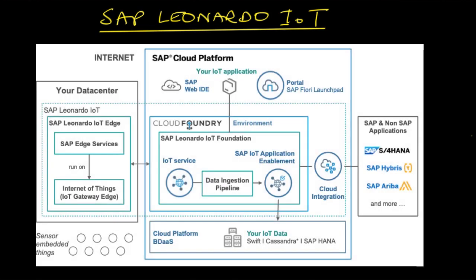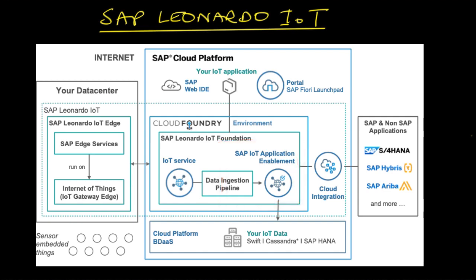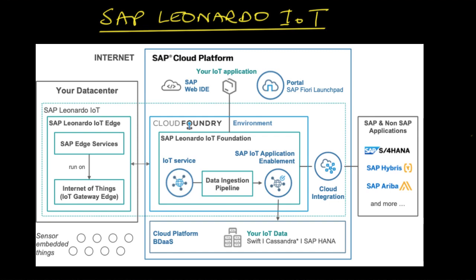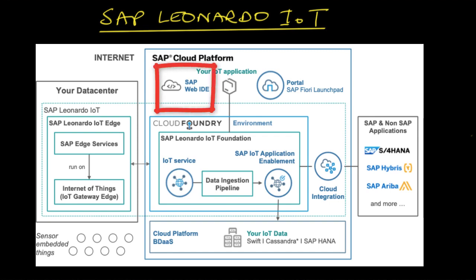Architecturally, when you connect your sensors — whether directly through Gateway Cloud or Gateway Edge — the data is loaded into the IoT service. IoT application enablement connects via a data ingestion pipeline, which under the scenes uses Kafka, meaning you can also access your IoT data within SAP HANA. When building your things, you use the SAP Fiori Launchpad to build property sets, things, and thing types, and then use the SAP Web IDE to access IoT templates and build your applications.